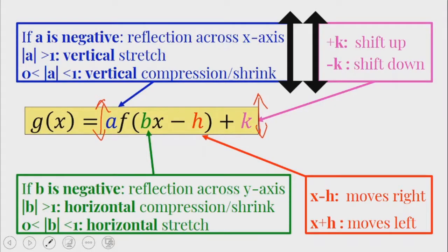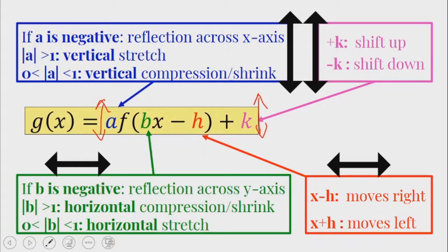Since a and k are outside, they have a vertical change on the function. This means it will cause a vertical reflection, stretch, or compression depending on the criteria. Whereas k will cause the function to move up and down — we call it a vertical translation. Now for b and h, they are inside what makes that function unique, so they are horizontal changes. The b parameter causes a horizontal reflection across the y-axis or a horizontal stretch or compression depending on the value of b. Whereas for h, if the expression is x minus h with a negative sign, it moves to the right; if positive, it moves to the left. So h is called a horizontal translation.